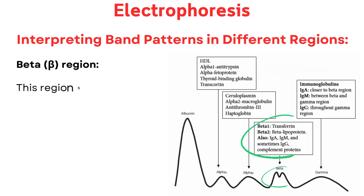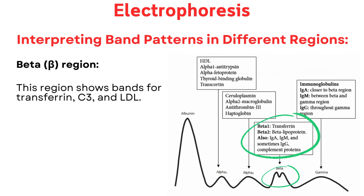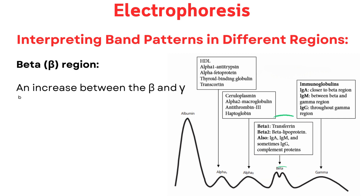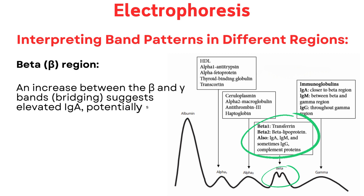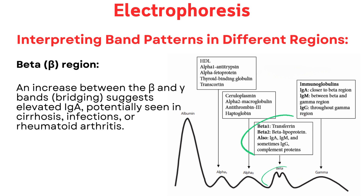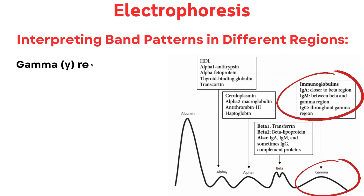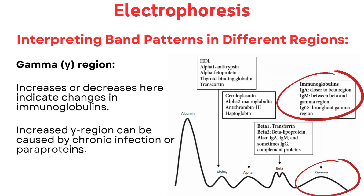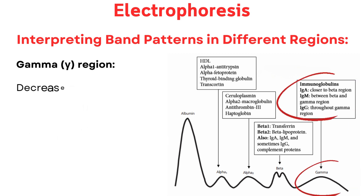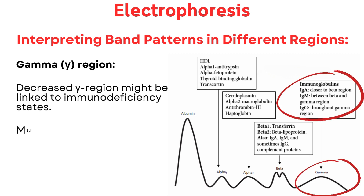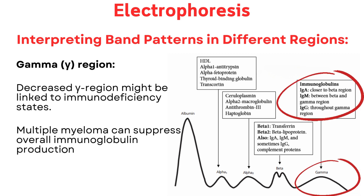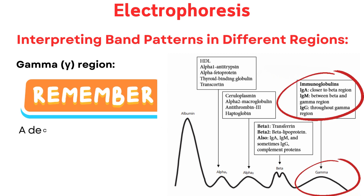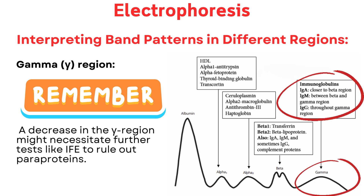Beta-1 region shows bands for transferrin, C3, and LDL. Transferrin migration might shift due to a lack of carbohydrates. An increase bridging between the beta and gamma bands suggests elevated IgA, potentially seen in cirrhosis, infections, or rheumatoid arthritis. In the gamma region, increases or decreases indicate changes in immunoglobulins. Increased gamma can be caused by chronic infection or paraproteins; decreased gamma might be linked to immunodeficiency. Multiple myeloma can suppress overall immunoglobulin production except for the abnormal clone. A decrease in the gamma region may necessitate further tests like IFE to rule out paraproteins.